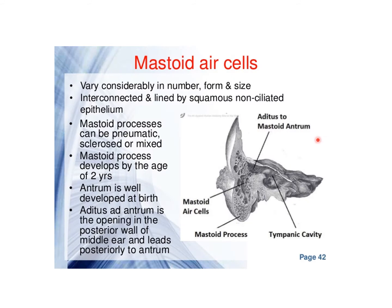Mastoid air cells vary considerably in number, form, and size. They are interconnected and lined by squamous non-ciliated epithelium. The air cells can be of three types: pneumatic, sclerotic, or mixed. The mastoid process develops by the age of two years. The antrum is well developed at birth, and there is an aditus in the middle ear leading to the mastoid antrum.